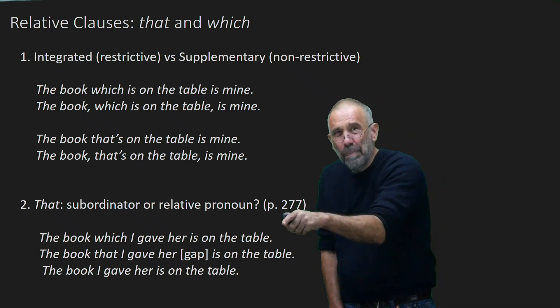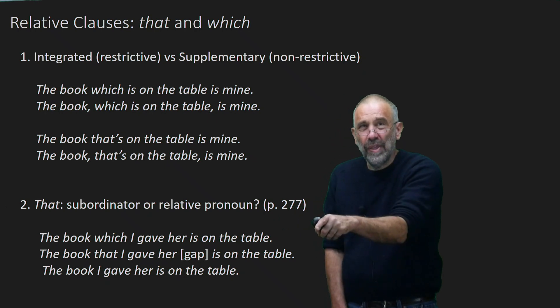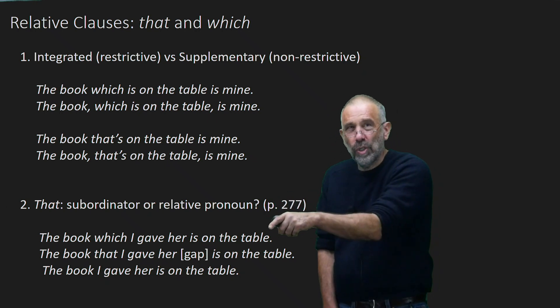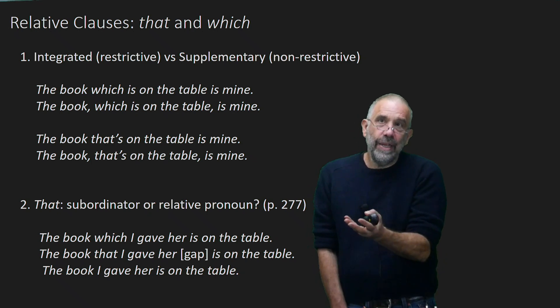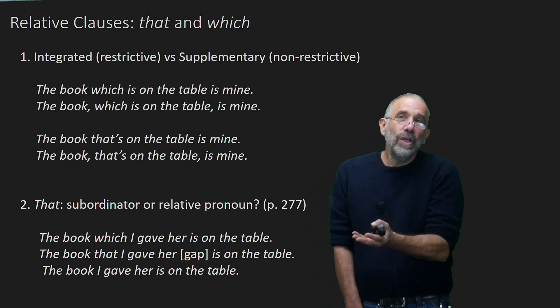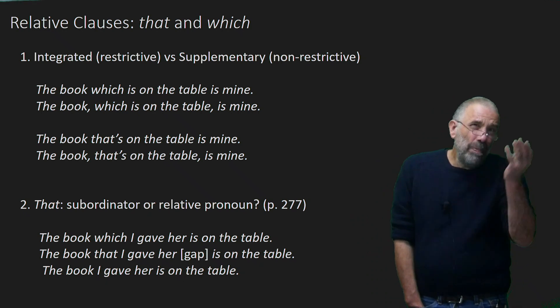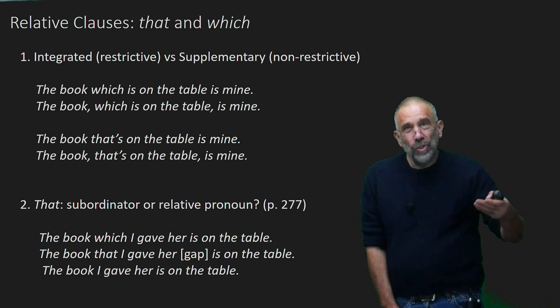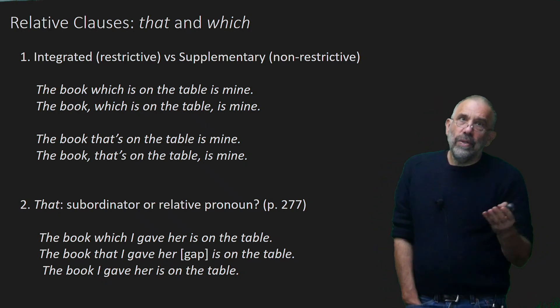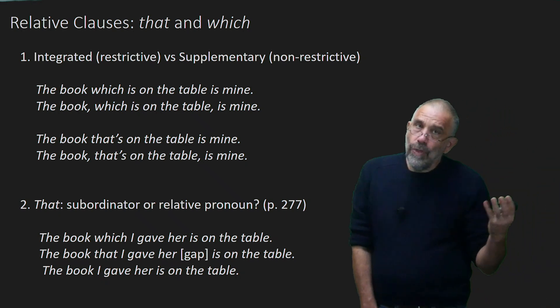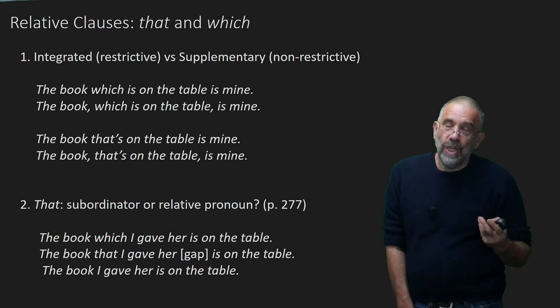In the book which is on the table is mine. The book, that particular book, the one which is on the table, I'm telling us which book we're talking about. So that would be an integrated relative. Whereas, the book, oh and by the way it's on the table, which is on the table happens to be mine. I think you'll hear that difference if you keep saying those sentences.